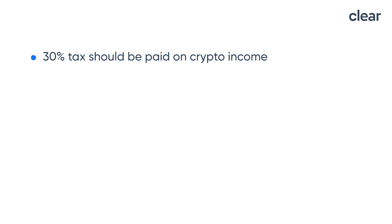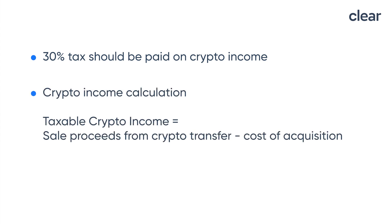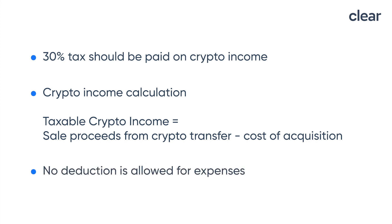Tax on crypto income is to be paid at a 30% flat rate. Crypto income can be calculated by reducing the cost of acquisition — that is the purchase cost — from the consideration amount received, that is the transfer value or the sale price. No deduction is allowed for expenses related to crypto income. For example, you cannot take deductions for any transaction cost, charges paid to crypto exchanges, or any other related cost. Only the cost of acquisition can be deducted.